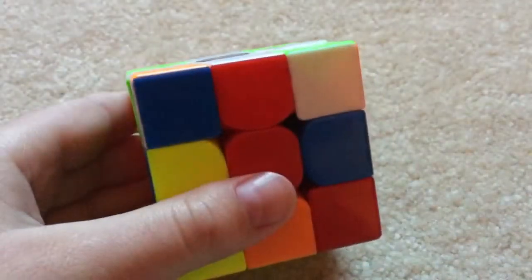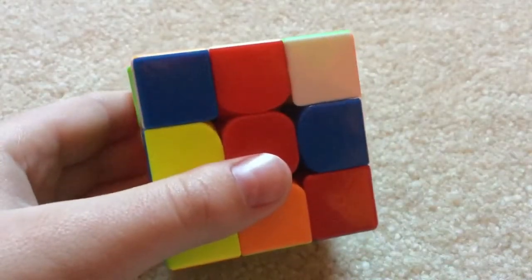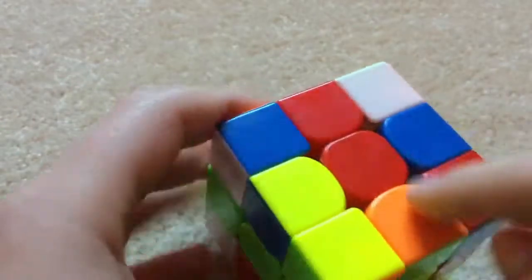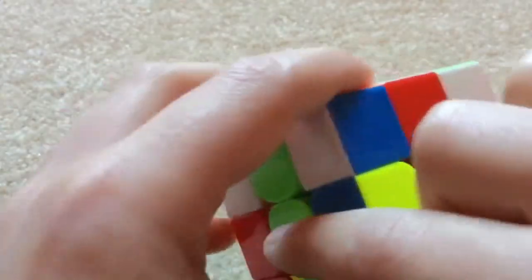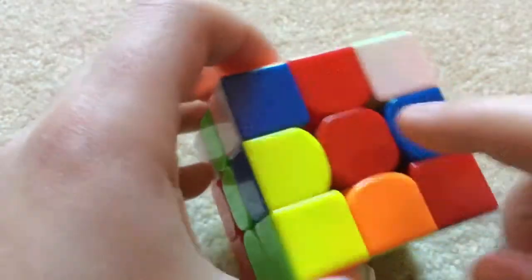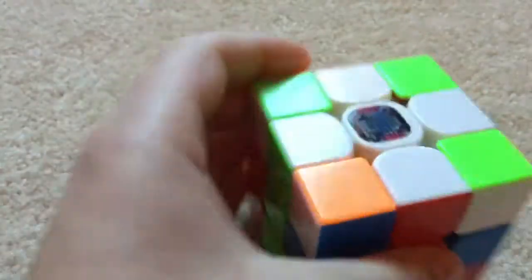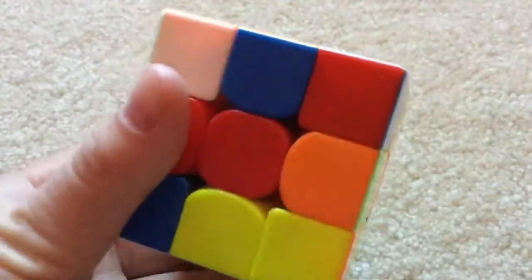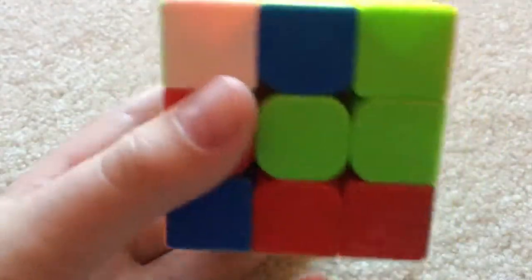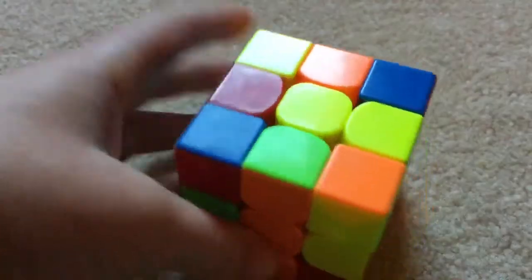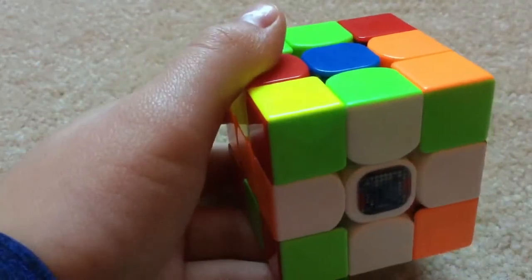And then sometimes you'll get a case where you have all three the same, all three messed up. And that's just what we did last time, but without having to do the wide U. So there is one more case. Let me get to that. So this is the last case you can have for scramble cross.